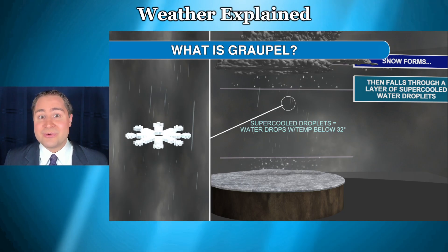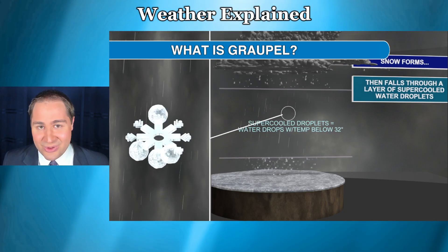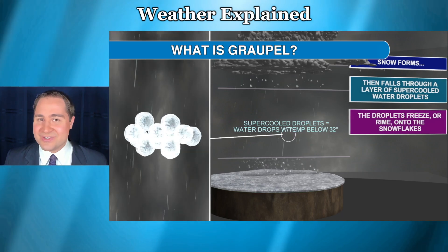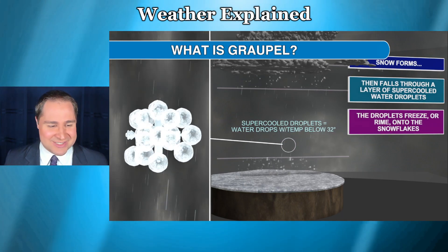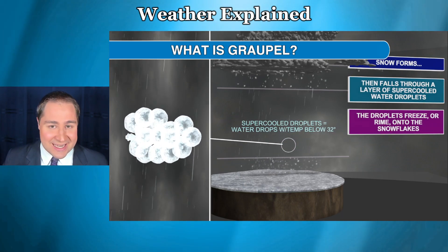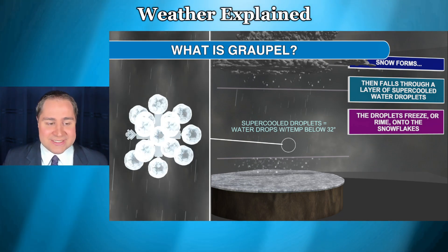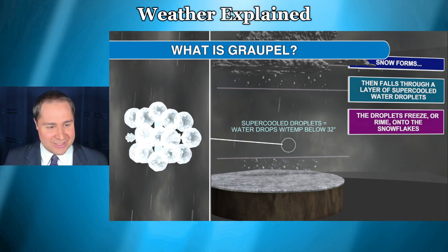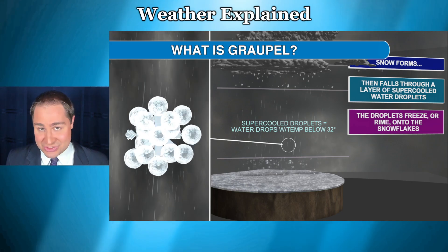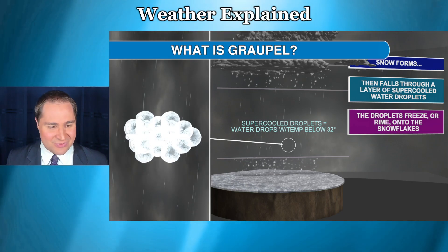But they really want to freeze. So when the snowflakes fall through this layer, snowflakes are something those tiny little water droplets can freeze to. And that's exactly what happens — these tiny little water droplets freeze to the outside of the snowflakes in a process known as riming. And that changes the appearance of these snowflakes.